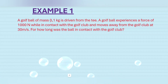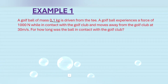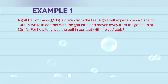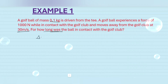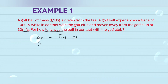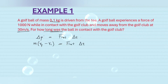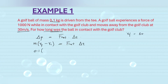Example: a golf ball of mass 0.1 kg is driven from a tee. The golf ball experiences a force of 1000 newtons while in contact with the golf club and moves away from the golf club at 30 meters per second. For how long was the ball in contact with the golf club? We apply the formula for impulse: delta p equals Fnet times delta t, or m(vf - vi) = Fnet × delta t.